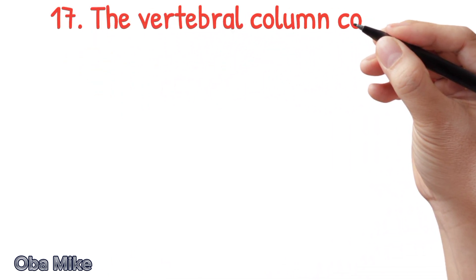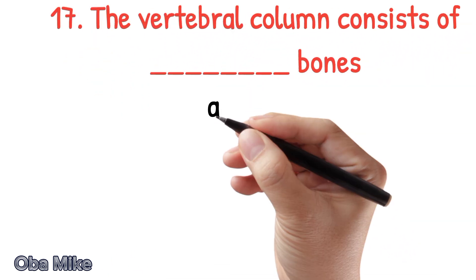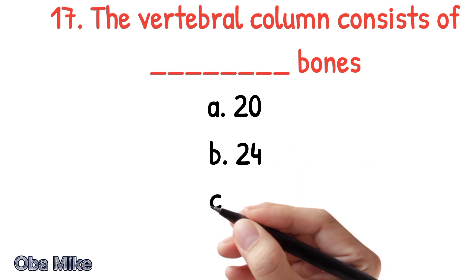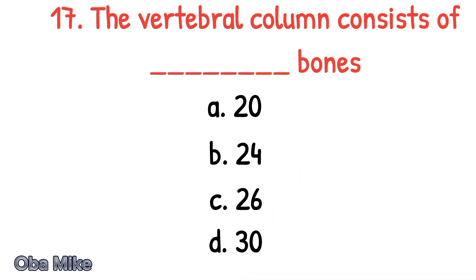Number 17. The vertebral column consists of dash bones. A. 20, B. 24, C. 26, D. 30. The correct answer is C. 26.